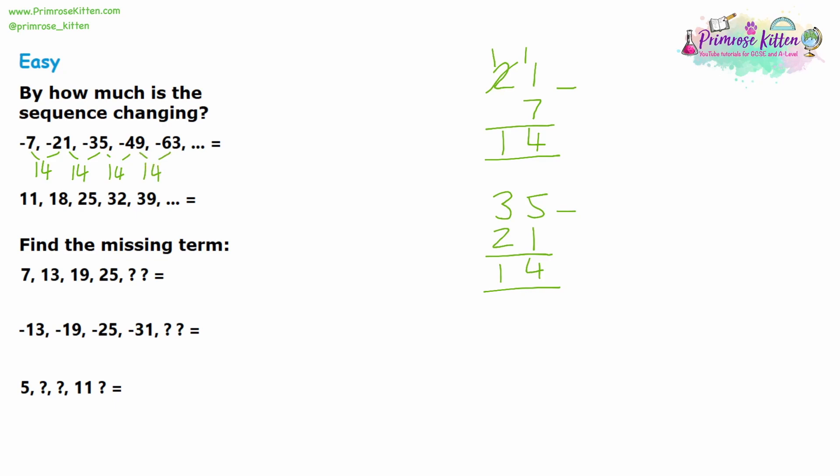We've been asked by how much the sequence is changing. Remember at the start we said we were ignoring the negative numbers — but it's not 7 and 21, it's negative 7 and negative 21. So we're not going up by 14; we're going down by 14. Each term is take away 14. So by how much is the sequence changing? We are taking away 14.